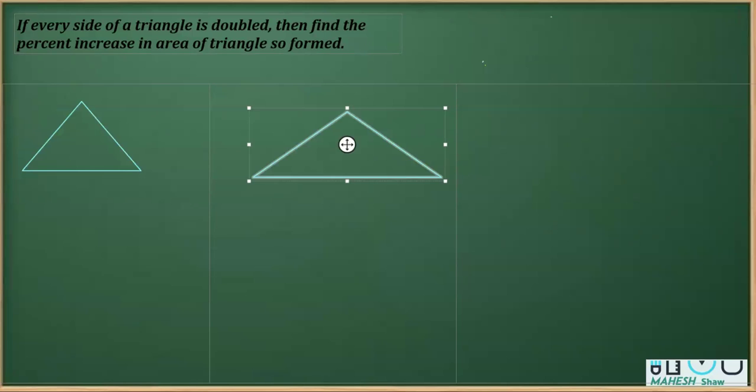And in order to make this triangle, what I'm keeping in mind is that the side is being doubled. So in that case, if I take the sides of this triangle as A, B, and C, then the sides of this triangle will be twice of A, that is 2A, 2B, and 2C.